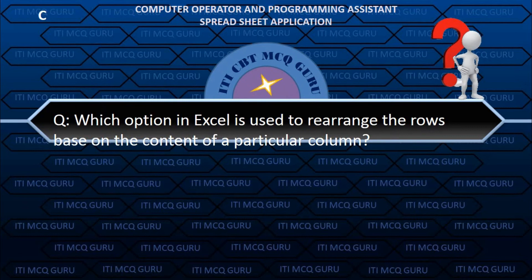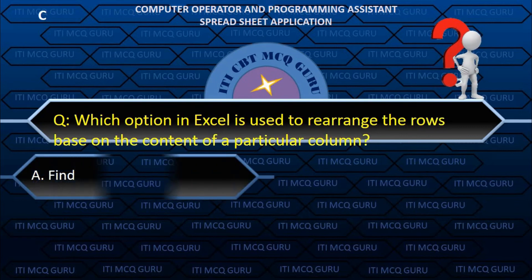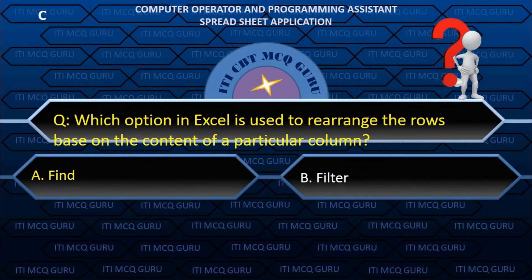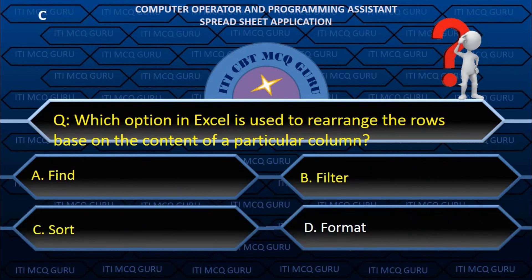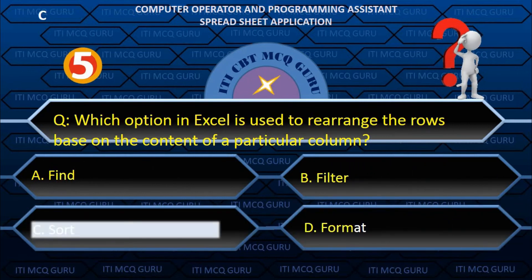Which option in MS Excel is used to rearrange the rows based on the content of a particular column? C. Sort.